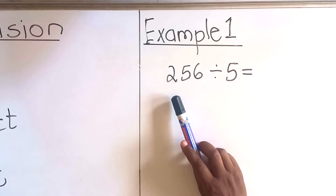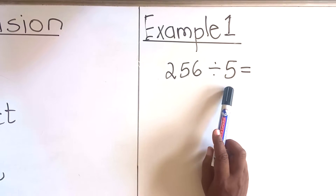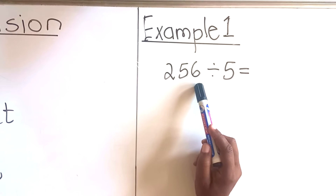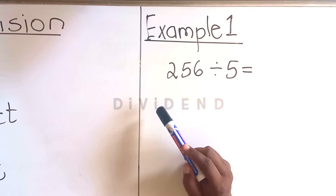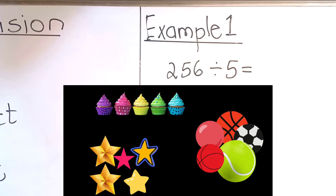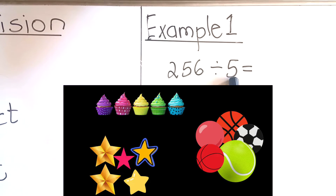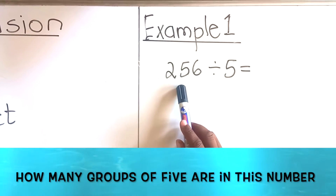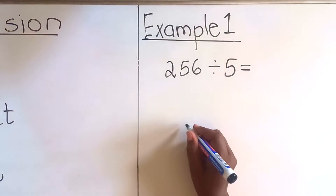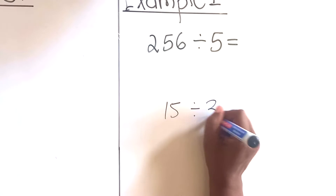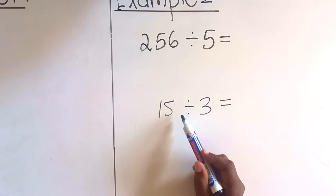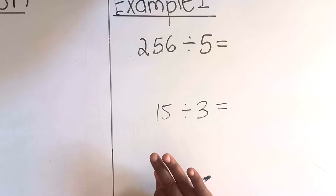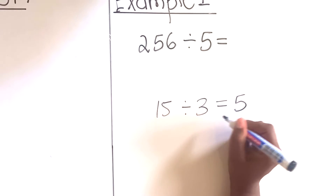When we say 256 divided by 5, the 5 is called the divisor and 256 is the dividend — it's what we are going to divide. Dividing by 5 means: how many groups of 5 are in this number? For example, 15 divided by 3 — you are asking how many groups of 3 are in 15. If you group them: 3, 6, 9, 12, 15 — there are five groups of three in 15. That's what divide means.